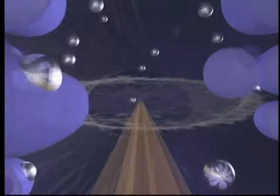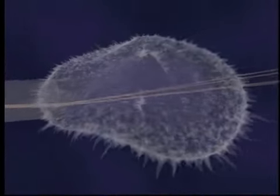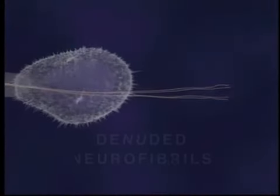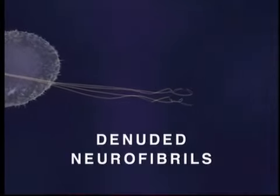Consequently, the neurite's microtubules begin to disassemble into free tubulin molecules, leaving the neurite stripped of its supporting structure. Ultimately, both the developing neurite and its growth cone collapse, and some denuded neurofibrils form aggregates or tangles, as depicted here.